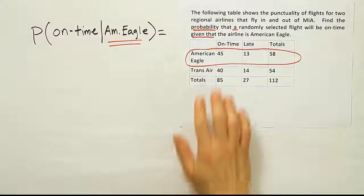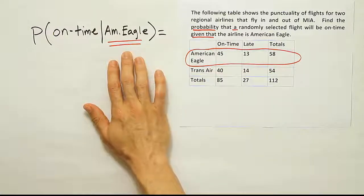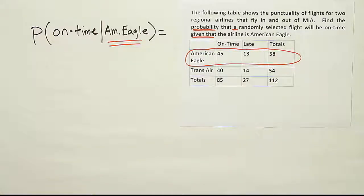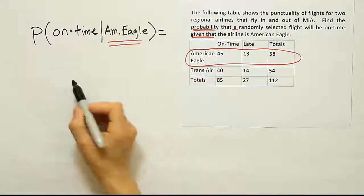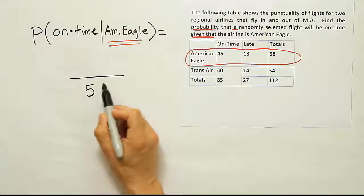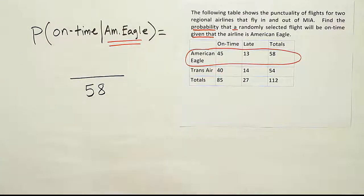Well, once you've highlighted the row or column that corresponds to the given that condition, remember your total for that column becomes your denominator when you're dealing with conditional probability. So we're only going to look at 58 flights here, the 58 flights belonging to American Eagle. Now, for the other two remaining numbers, we need to figure out which one goes on top for the fraction.